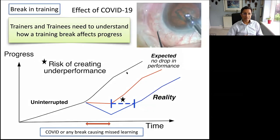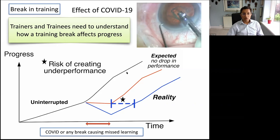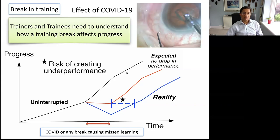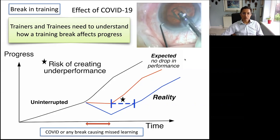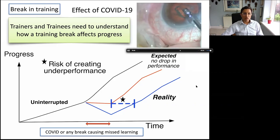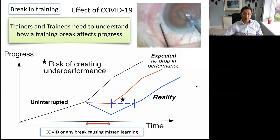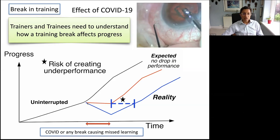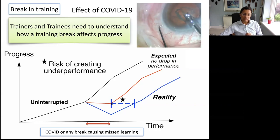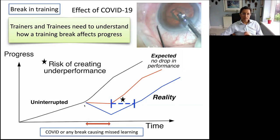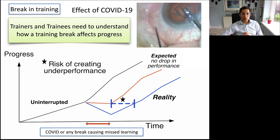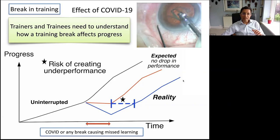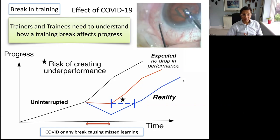With the effect of COVID, many theatres have been closed. After a break, trainees may come back with their non-dominant hand all over the place — you can see the cornea gets hit. On the learning graph, you'd expect them to return at the same level, but their confidence and ability dips and it takes a while to come back up. As a trainer and trainee, you have to realise you will have little dips in progress if you take a break.